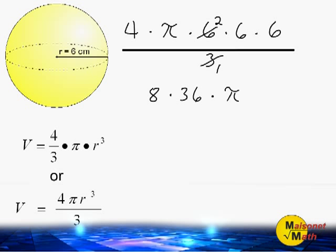The next thing that we are going to do is multiply 8 times 36, which is 288. And we still have to multiply 288 by pi. Now, if you were asked to find the volume of a sphere in terms of pi, we would already have our answer. We would say the volume is 288 pi cubic centimeters.